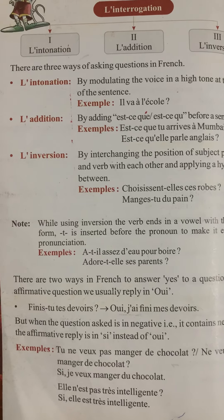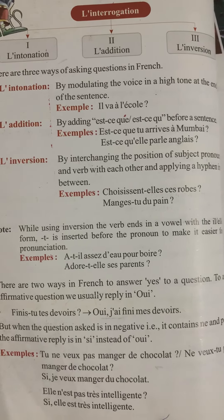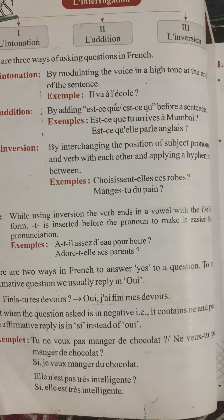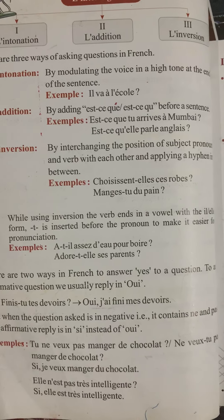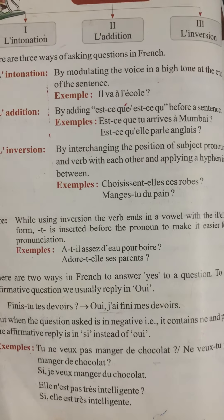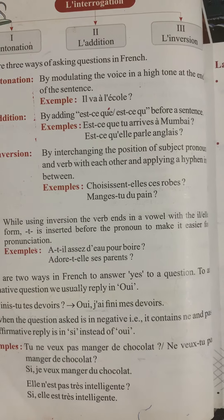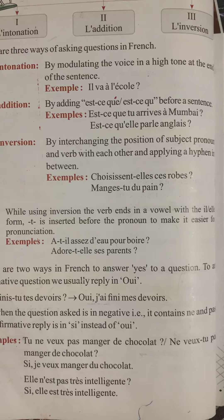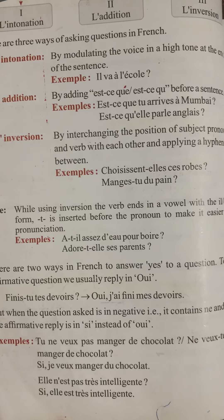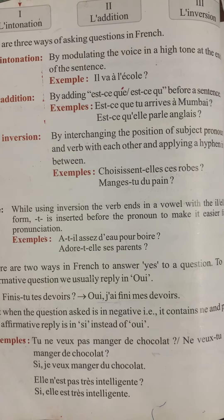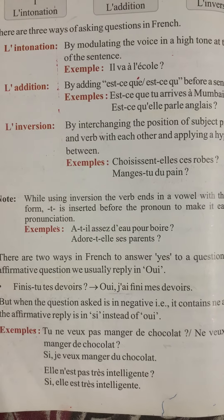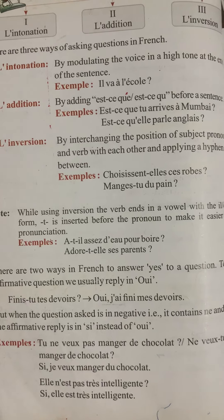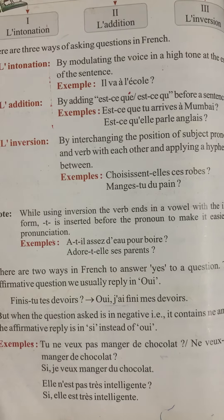But when the question is in the negative — that is, it contains 'ne' before the verb and 'pas' after the verb — the affirmative reply is 'si' instead of 'oui'. Example: 'Tu ne vas pas manger du chocolat?' / 'Ne vas-tu pas manger du chocolat?' Both have negation, so the answer must start with 'si': 'Si, je vais manger du chocolat' — 'Of course, I will eat the chocolate.' Whenever the question is in negation, the answer will be 'si'.